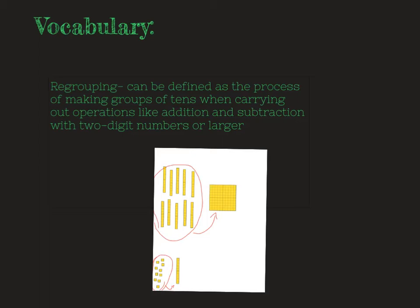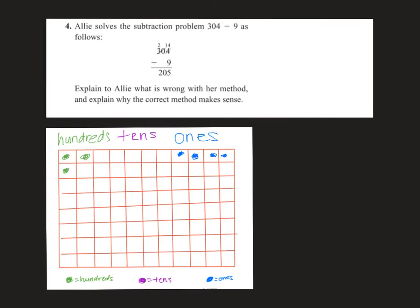Vocabulary: regrouping can be defined as a process of making groups of 10 when carrying out operations like addition and subtraction with two-digit numbers or larger. Here you can see 10 ones grouped together can make a 10, and 10 tens grouped together can make a hundreds block.